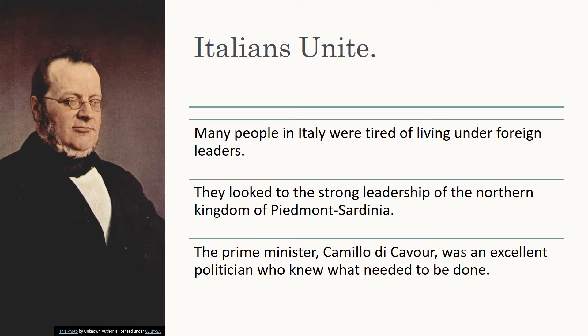King Victor Emmanuel II was the leader of this region. He named Camillo de Cavour, the picture you see there, as prime minister of the Piedmont-Sardinia kingdom. Cavour was an excellent politician who knew how to gain control, how to use politics and government, and how to gain alliances. He is going to be an important factor in uniting Italy.